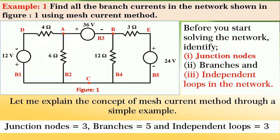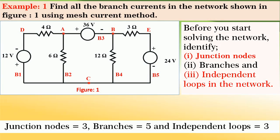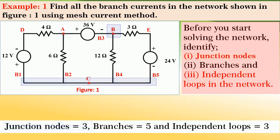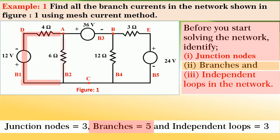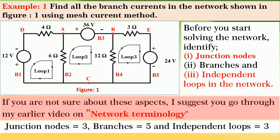Let me explain the concept of mesh current method through a simple example. Consider the network shown in figure 1, in which we are required to solve for all branch currents using mesh current method. Before you start solving, identify the junction nodes — there are 3 junction nodes: A, B, and C. There are 5 branches: B1, B2, B3, B4, and B5. There are 3 independent loops: loop 1, loop 2, and loop 3. If you are not sure about identifying these, I suggest you go through my earlier video on network terminology.